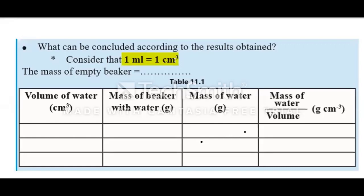The very first step of recording our readings is to record the mass of the empty beaker. The mass of the empty beaker is 250 grams. Now we need to tabulate our readings and form a table. The first column is volume of water, the second column is mass of beaker with water, and the third column is mass of water.